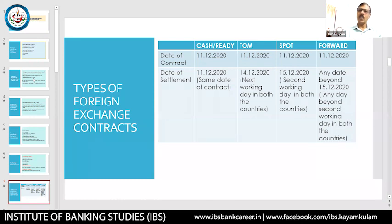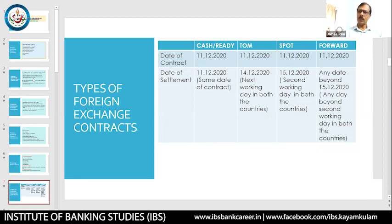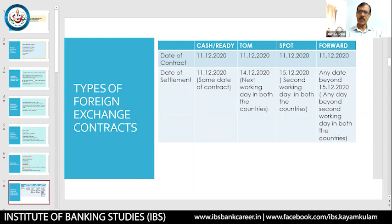Spot is settlement on the second working day in both countries. Any settlement beyond the second working day is called a forward transaction. So: same day = cash/ready, next working day = tom, second working day = spot, beyond second working day = forward. The forward period can be in months or in days — one month forward from 11th December would have a value date of 11th January.